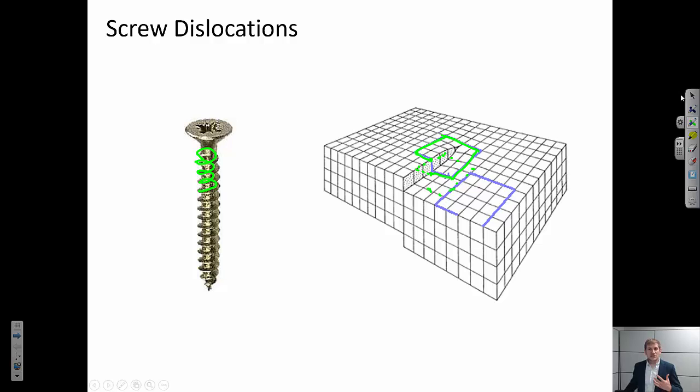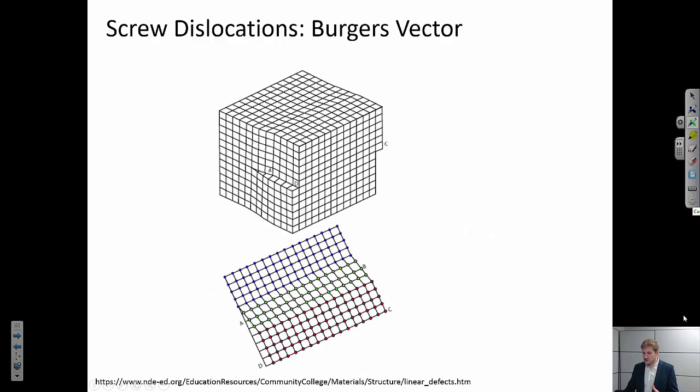Now let's do similarly to what we did for the edge dislocations. Let's first start by describing the burgers vector for the screw dislocation. If you remember, a burgers vector is a vector that completes a circuit that is drawn around that dislocation.